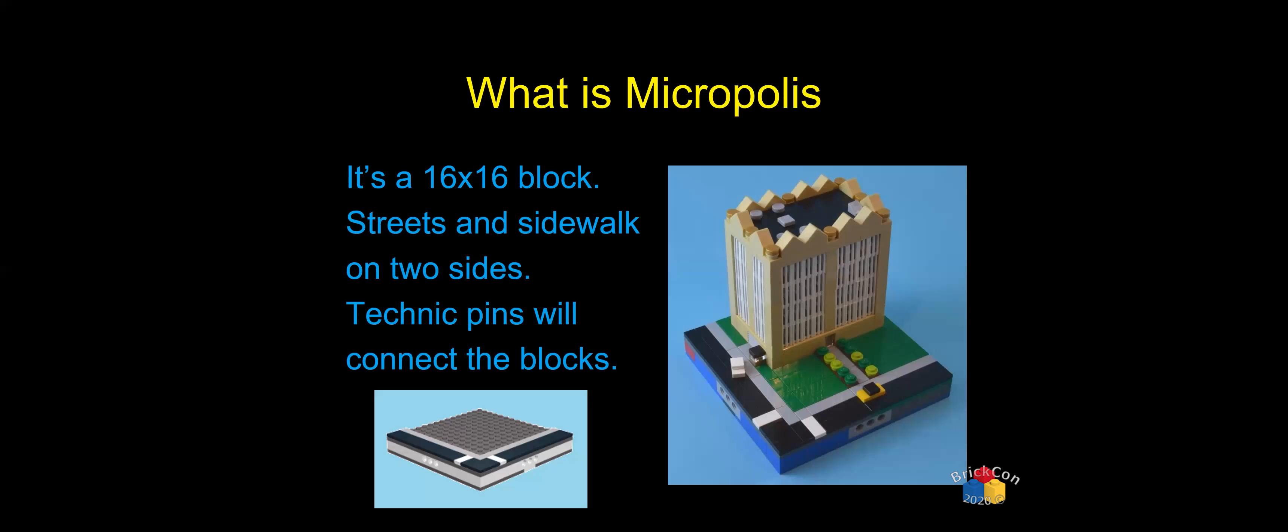In the picture you can see there's a plate on the bottom, a brick layer in the middle with a Technic brick on each of the four sides. That's so you can peg blocks together and anchor them side by side so they line up. And then a plate layer on top of that. And after that, you can do whatever you like. Although normally what you're going to see is that road layer on top that's two studs wide and a sidewalk layer that's one stud wide. So you really only get 13 by 13 for your model.